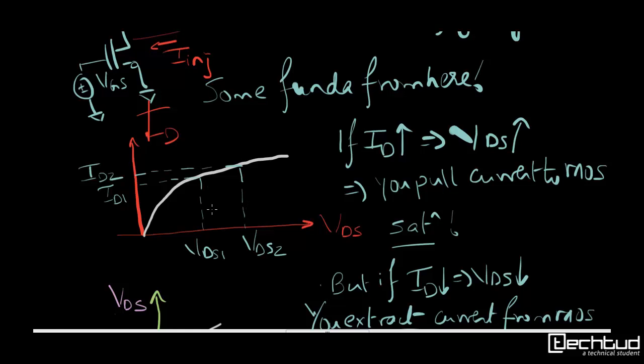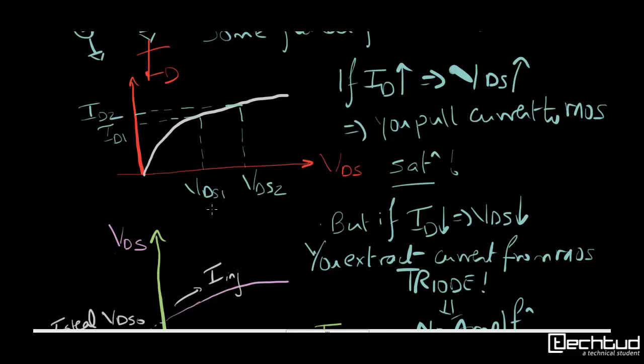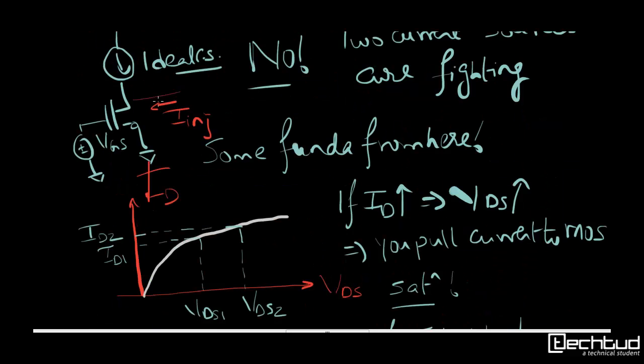So if ID is increasing then VDS is increasing. If you are injecting some current to this MOS transistor, what will happen is that ID will increase. So correspondingly VDS will also increase.